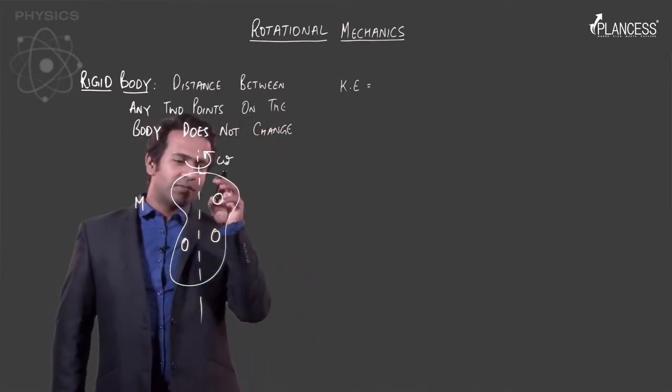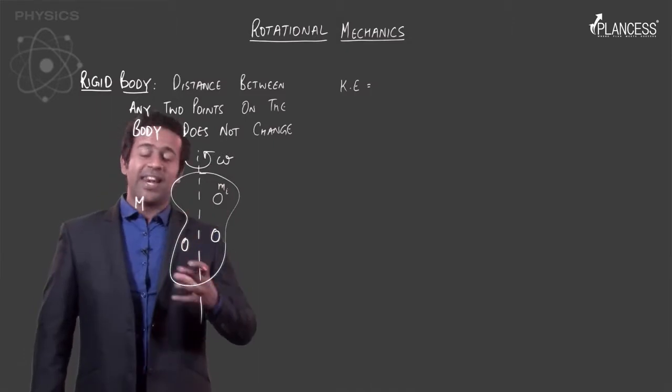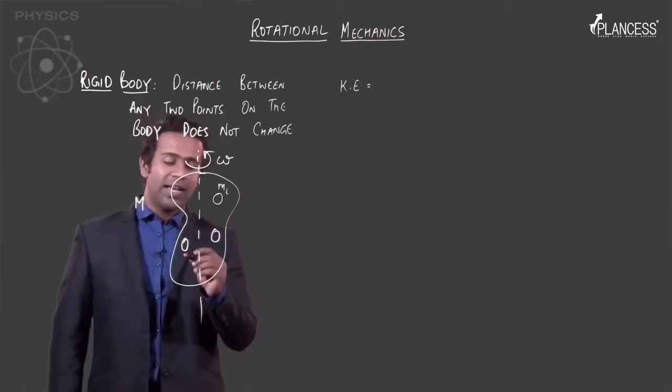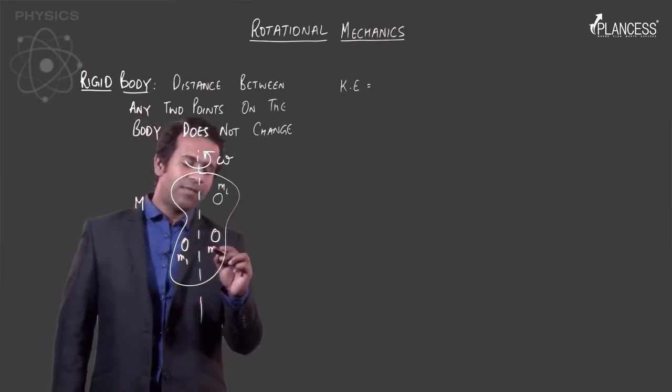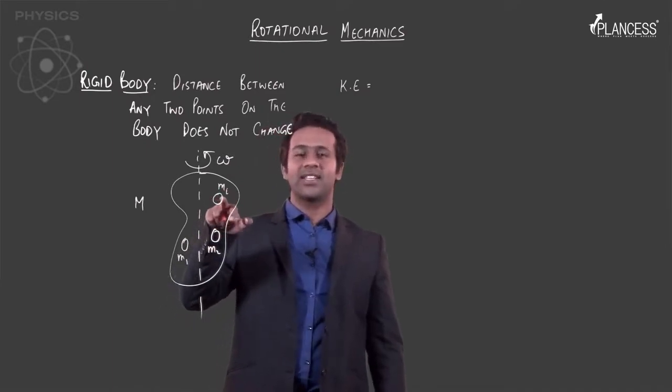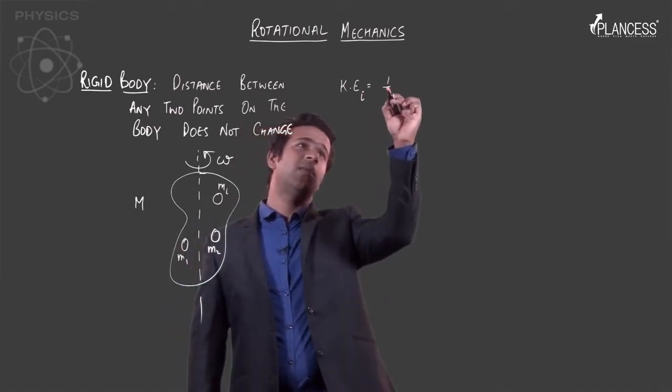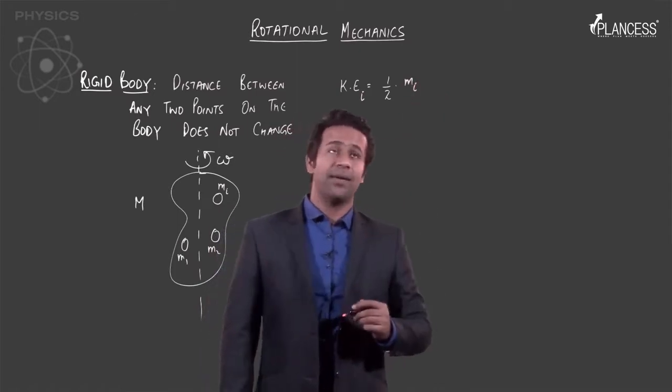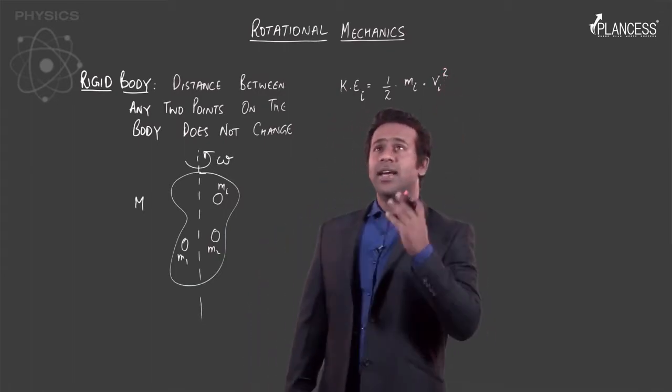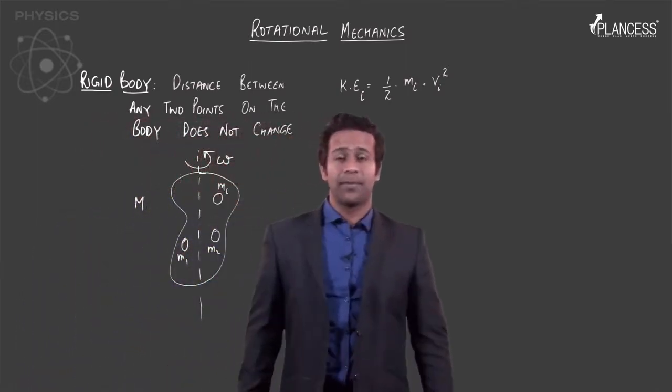The kinetic energy, we know that if we take any one body, like say this, let me call it Mi. So this is one particle and I am giving it a general index Mi. I can assume that this body is made up of n masses M1, M2 till Mn. So the kinetic energy of this i-th body, I know by definition would be half into the mass Mi into its speed square Vi.